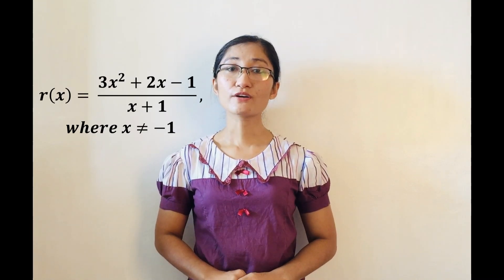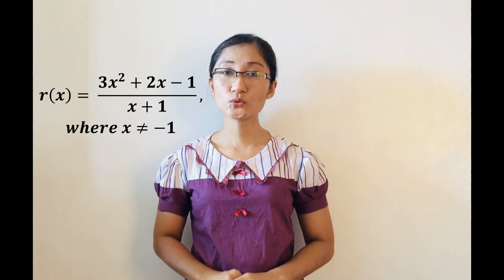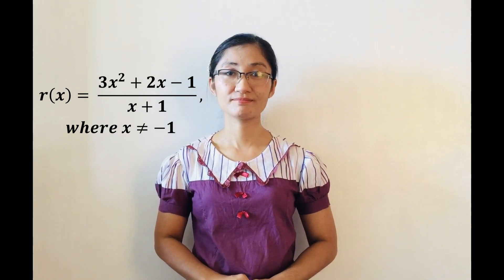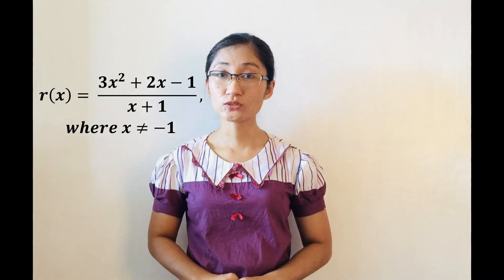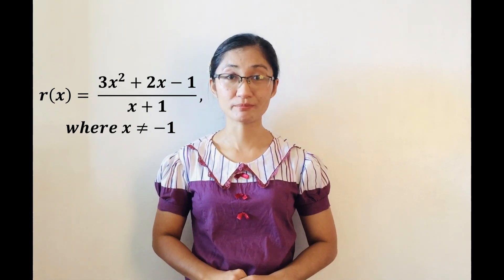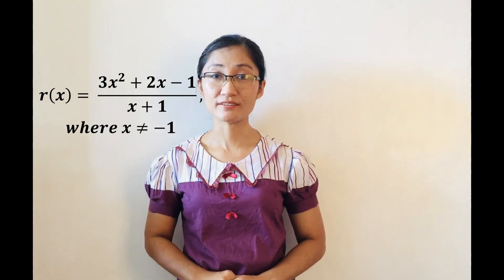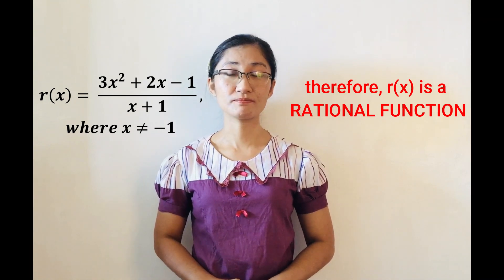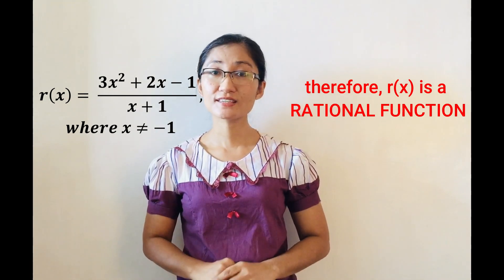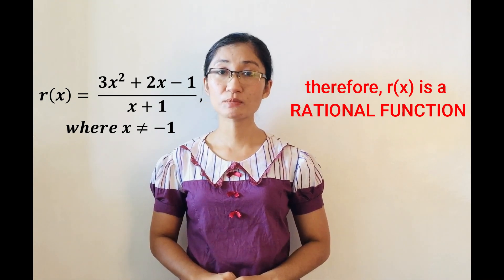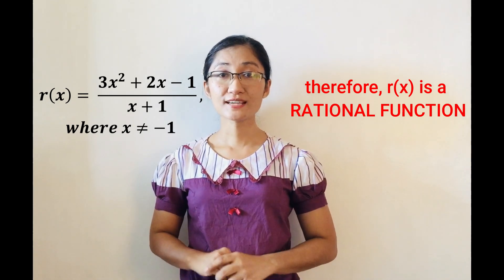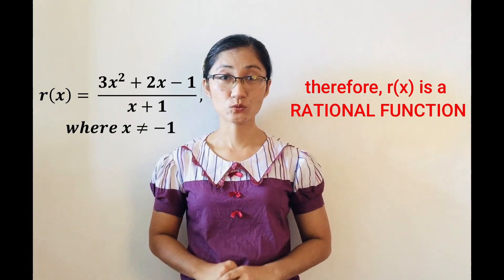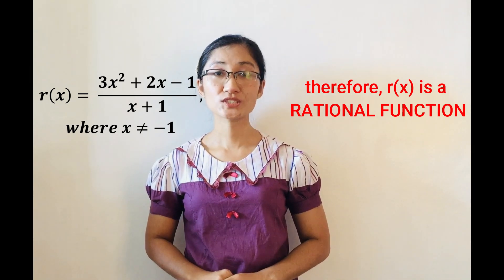For example, r(x) = (3x² + 2x − 1) / (x + 1), where x is not equal to −1. Is the numerator 3x² + 2x − 1 a polynomial? Yes. How about x + 1? Is it a polynomial? Yes. Therefore, r(x) is a rational function. So why does the given give a restriction that x should not equal −1? Because if x is equal to −1, then the denominator will become −1 + 1 = 0, which cannot be.